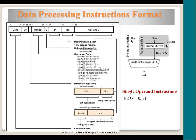You may wonder why in a single-operand instruction the operand is Rm rather than Rn. The reason is that only with Rm can you perform barrel shifter operations before feeding the value into the ALU. For a MOV instruction, the ALU just passes the value to Rd, but if an LSL or similar operation is specified, the barrel shifter operates on Rm first and then passes the result to the destination register.